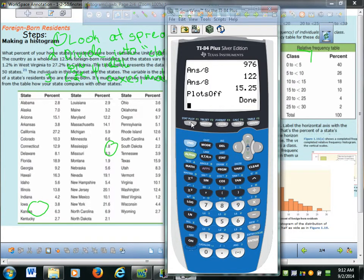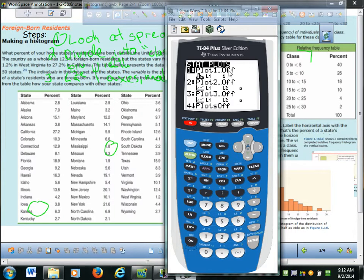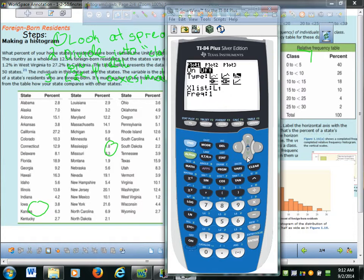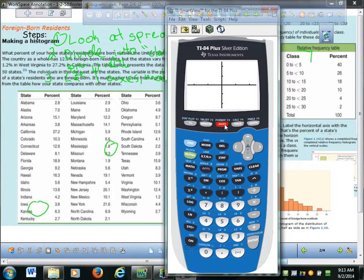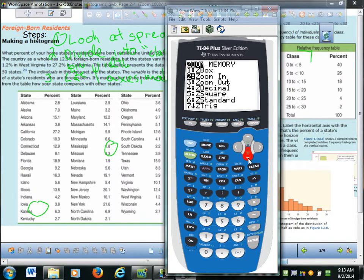And I go to second stat plot. And you turn your, so plot one, you want to turn that on. So you hit enter. And then you have these choices. Type. And over here, notice the little thing that looks like a histogram. That's the histogram. And you hit enter. And then list one, you go down there. That means your data is in list one. Frequency. I don't think you have to worry about that. And then you hit graph. And maybe nothing comes up. So what you do is you go zoom stat, which is, I believe, 10 or 9. Zoom stat.